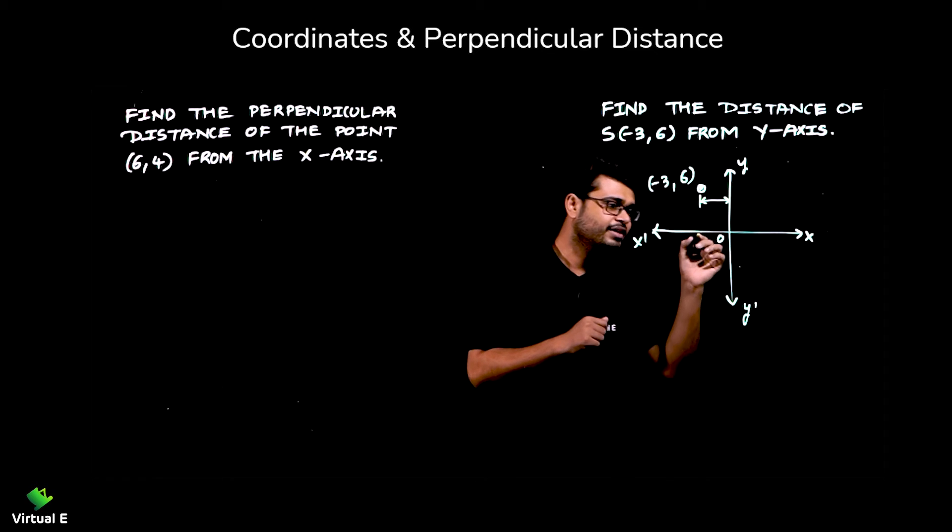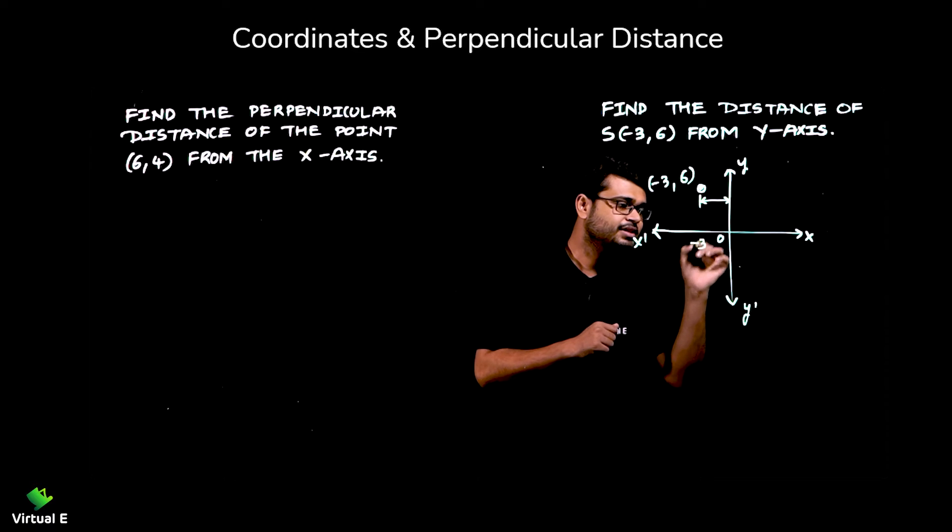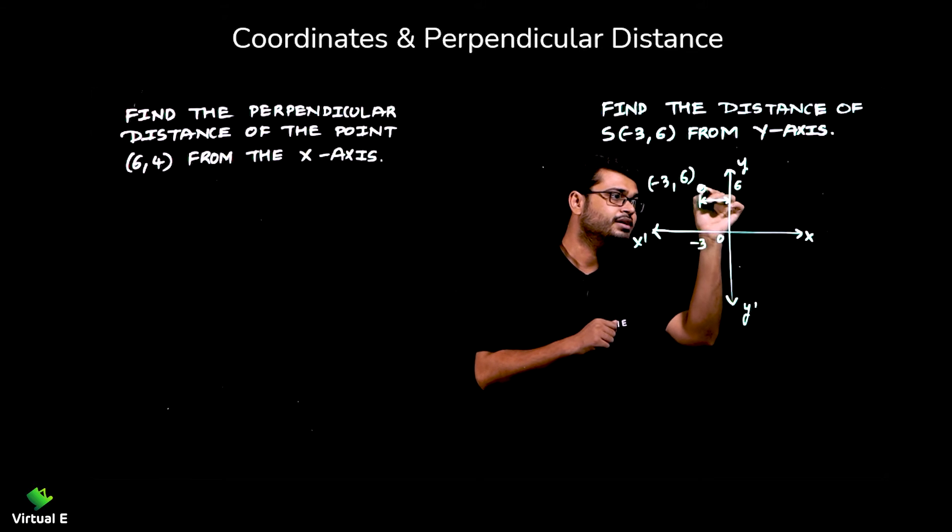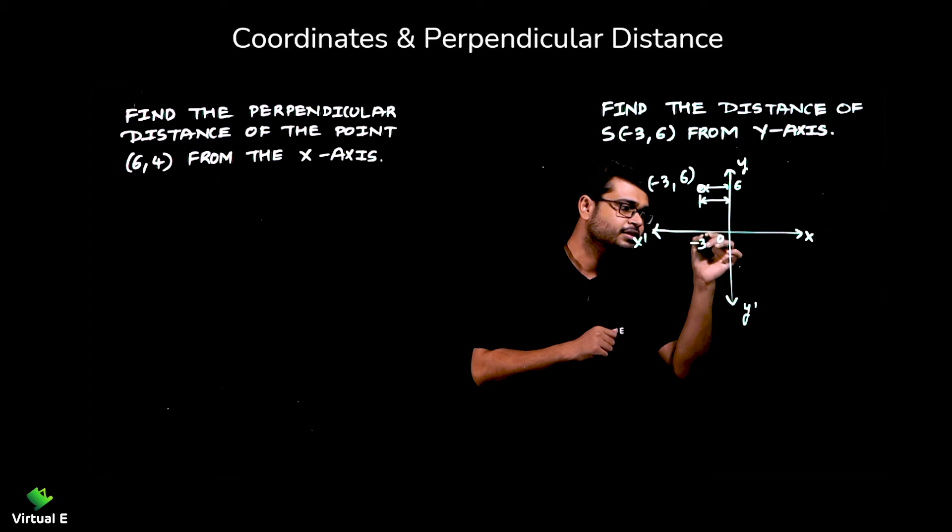The distance will be, generally this will be -3 and this will be 6 over here. So we are interested in this point. So basically, this distance we want to find.